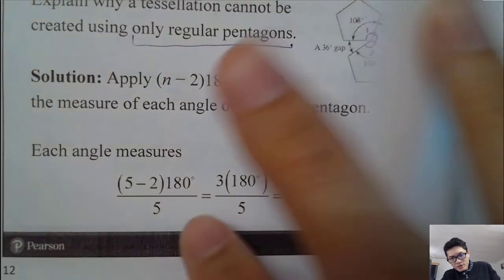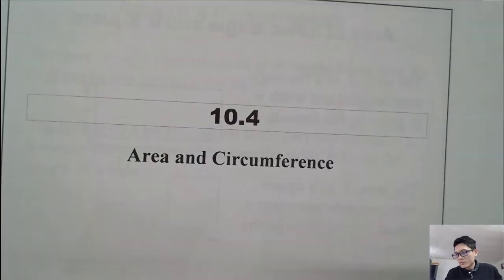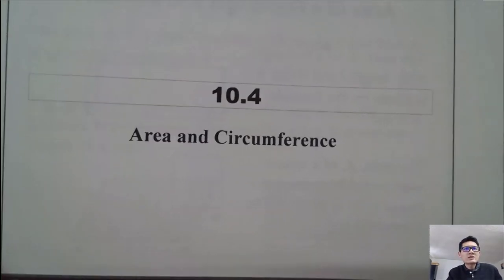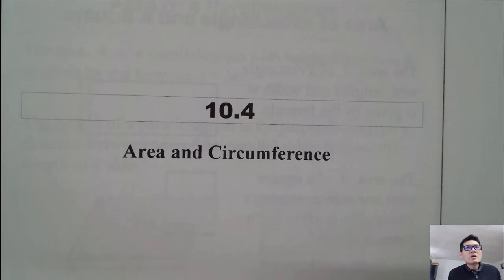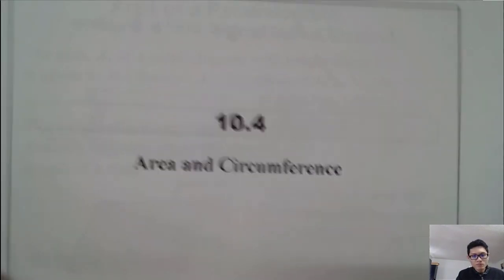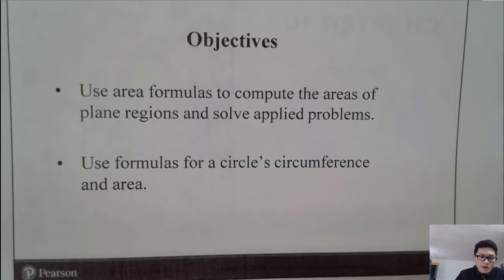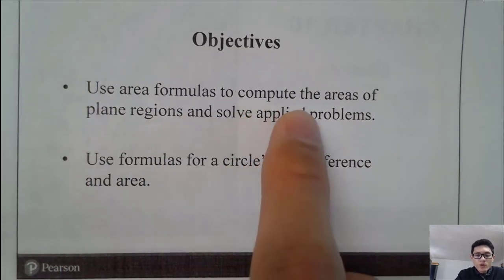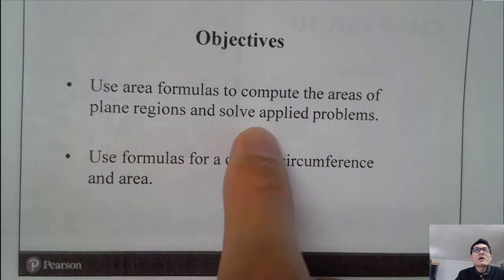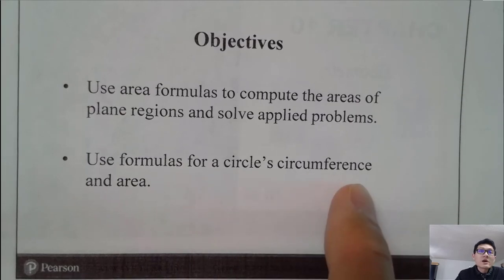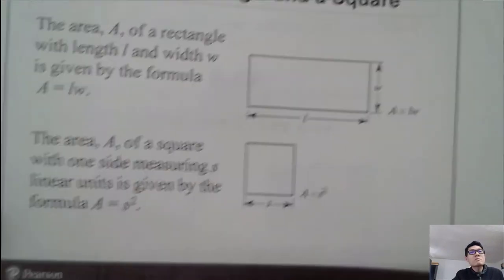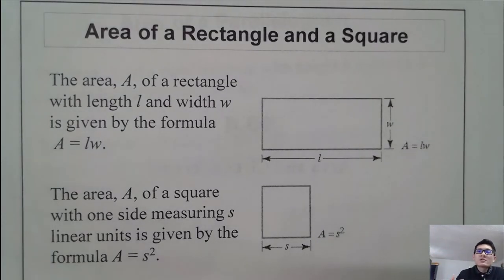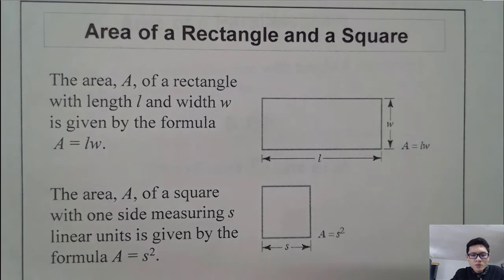That is the end of section 10.3. The next section, 10.4, is about area and circumference. There are two objectives: to use area formulas to compute areas of plane regions and solve applied problems, and to use the formulas for a circle's circumference and area.